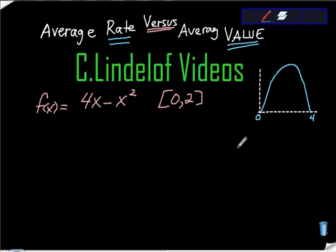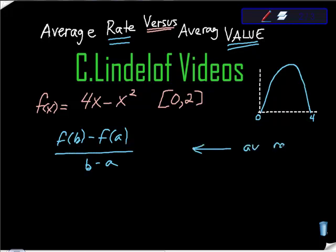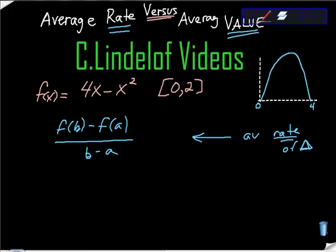Average rate of change versus average value of a function. Average rate of change is just born of algebra. It talks about a derivative. And to do that, we know that we just take f of b minus f of a over b minus a. So just to be clear, this is our average rate of change.